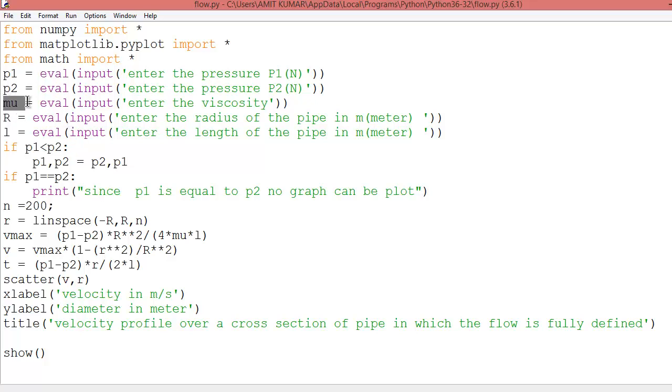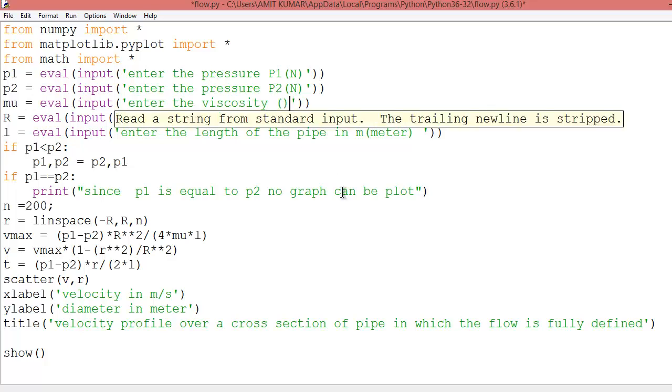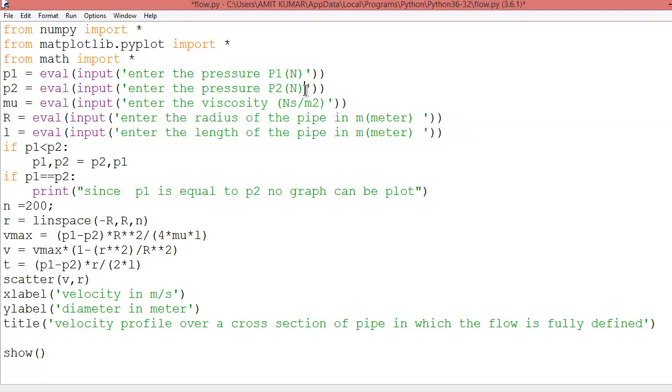Now mu is basically the viscosity. So I am taking the viscosity unit as a newton second per meter squared. Just remember I am using SI units.